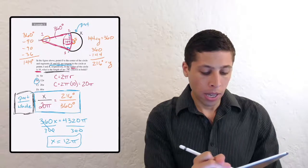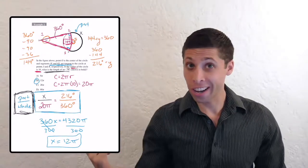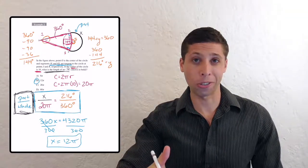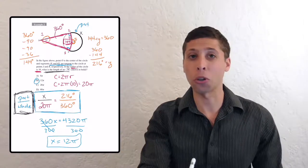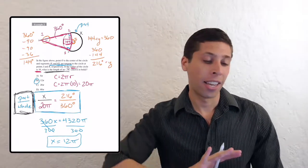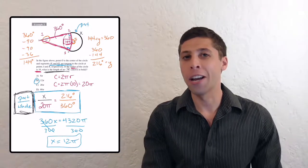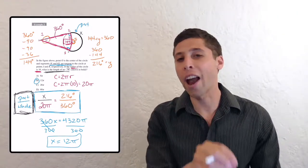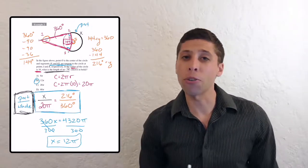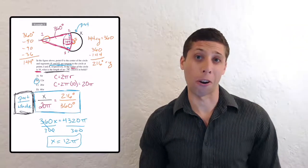When you see parts of circles on the exercise or the real test, I want you instantly thinking: part over whole. Write it on the page. It should be a reflex. Yes, there are going to be other things that twist it up and make it hard, but focus on the thing that you know. Narrow your focus to what you know, and you'll be surprised how far you can get even when the question is really hard.